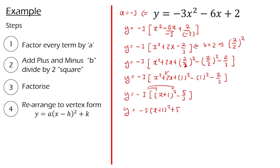Now we have finally converted into vertex form. Let's find the maximum point. We let everything inside the bracket equal to 0 — in our case x + 1 = 0, so x = -1. For the y-coordinate, we copy exactly the constant at the end, so y = 5. Therefore, we have found the maximum point for this equation, which is (-1, 5).